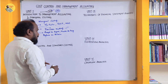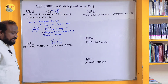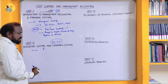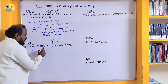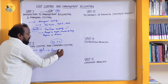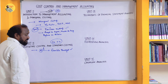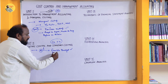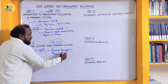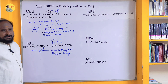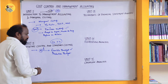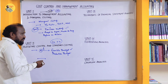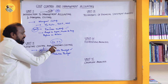Next is Budgetary Control and Standard Costing — from this chapter you can score 12 plus 4 marks, and it is a very easy chapter. You have a choice between Budgetary Control and Standard Costing. From Budgetary Control, the first topic is Flexible Budget, which is compulsory and will definitely appear in the exam for 12 marks. Production Budget may also come. Flexible Budget has almost 100% chance of appearing. One theory question may also be asked from this chapter.